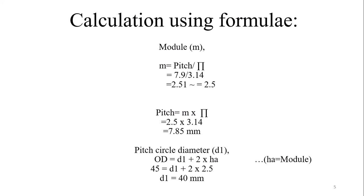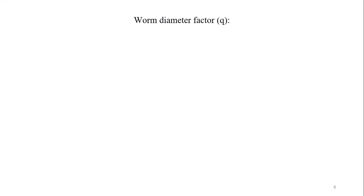Pitch circle diameter is annotated as d1. OD equals d1 plus 2 times ha, where ha equals module - it is the addendum value. We have calculated OD value 45mm and ha means module, we have 2.5, so pitch circle diameter will be 40mm.